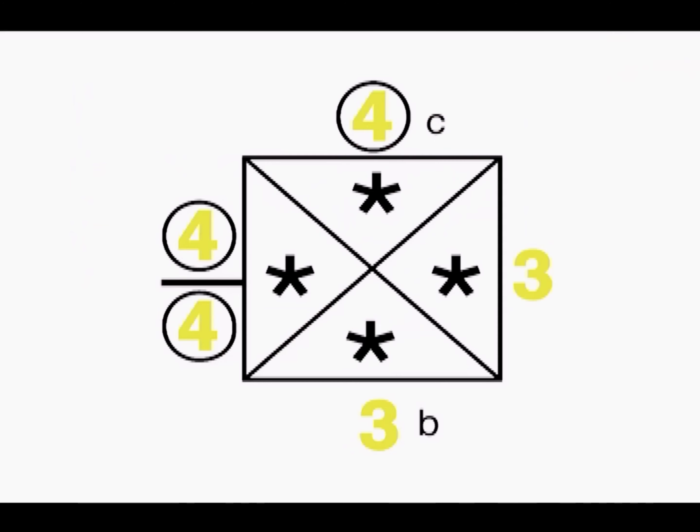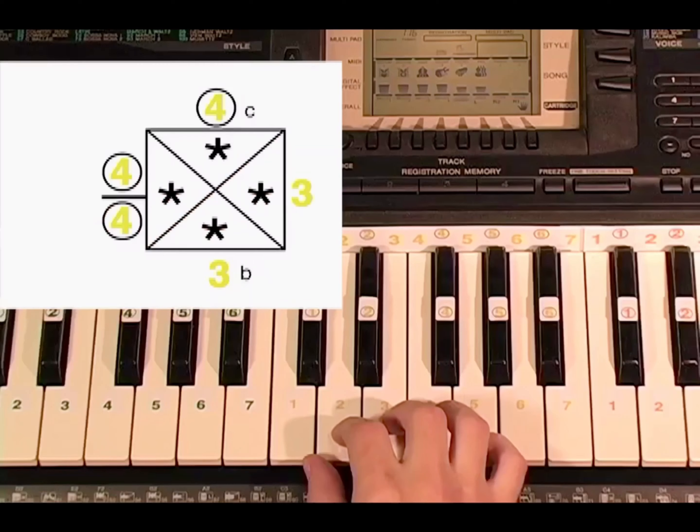In the song Waltzing Matilda, we include circled numbers or black keys. Let's try playing the first measure.